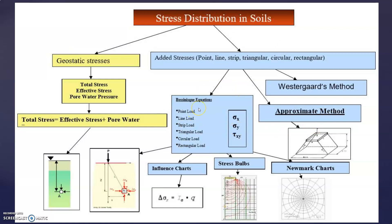Under the Bousinesque equation, there are different types of loads: point load, line load, strip load, triangular load, and circular load — all of which can be calculated. That means you have to calculate horizontal stress, vertical stress, and shear stress — that is, sigma X, sigma Y, and tau XY. For this Bousinesque equation, we use influence charts, stress bulbs, and also Newmark charts.